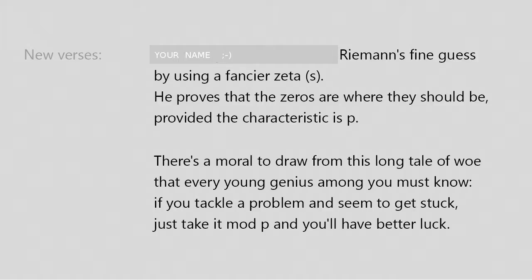André Weil has improved on old Riemann's fine guess by using a fancier zeta of s. He proves that the zeros are where they should be, provided the characteristic is p.